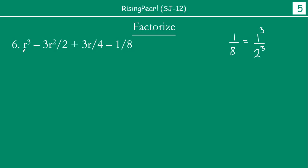This is very important, friends — whenever you see a question like this, you must first try to find out which identity is applicable. Since we have a cube identity, we notice that 1/8 can be written as (1/2)³. Looking at the negative terms, this is definitely not an (a+b)³ form; it looks more like an (a−b)³ form.